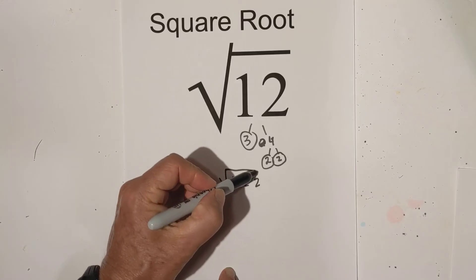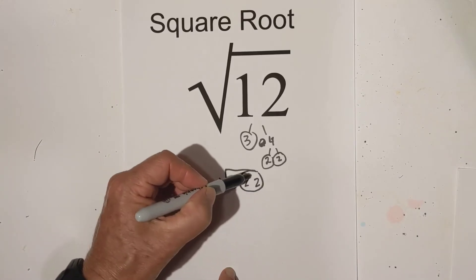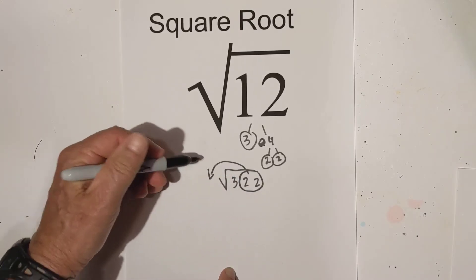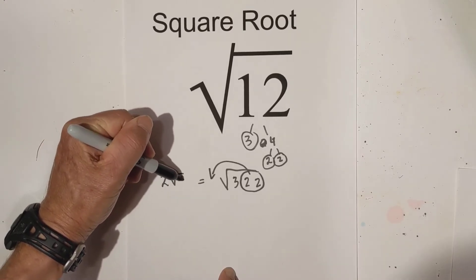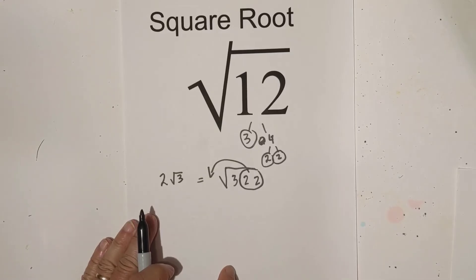What you can do is take pairs out. So I'm going to take one pair out and I can rewrite this as two square root three. There it is simplified.